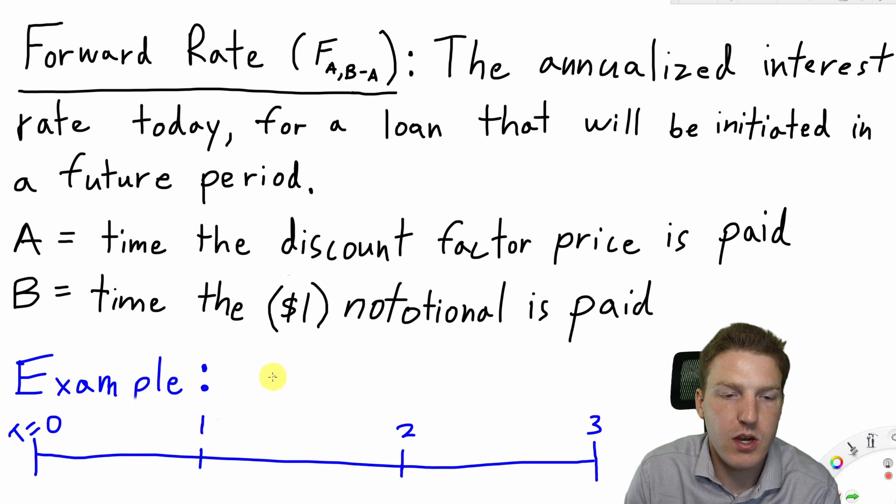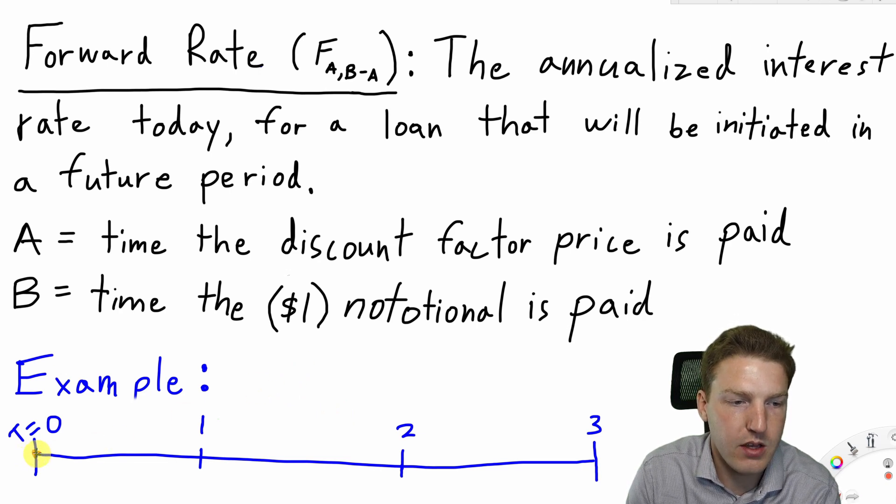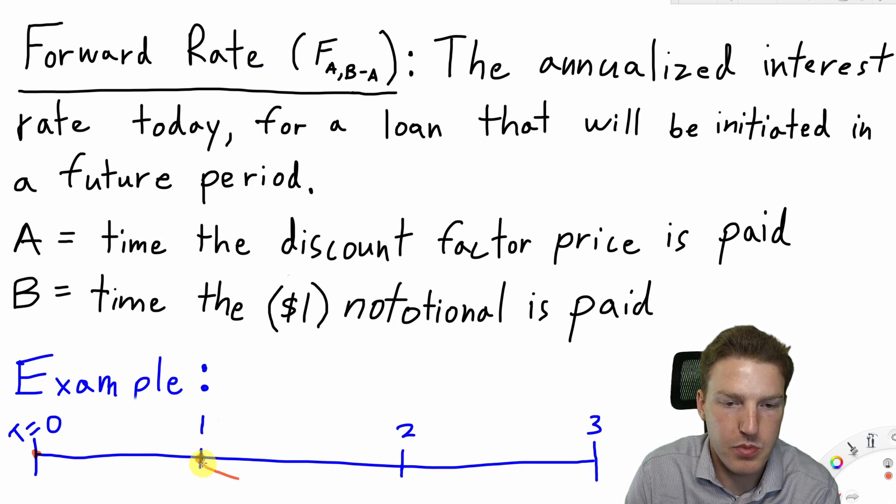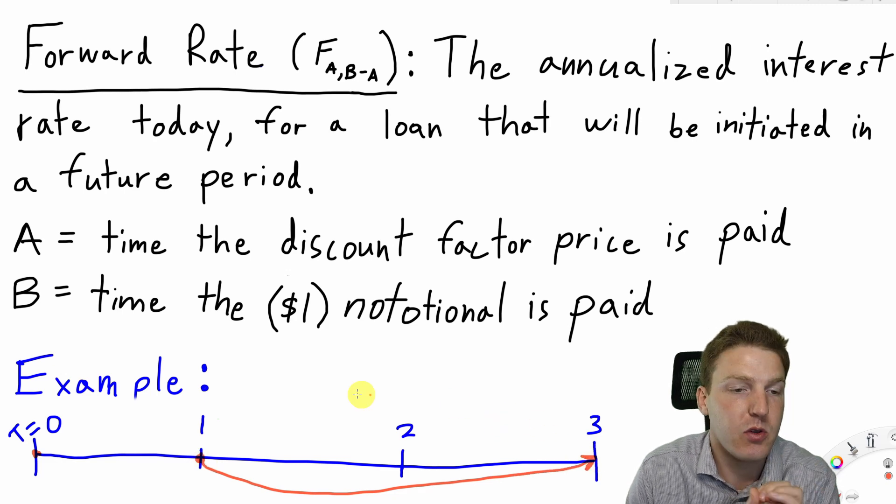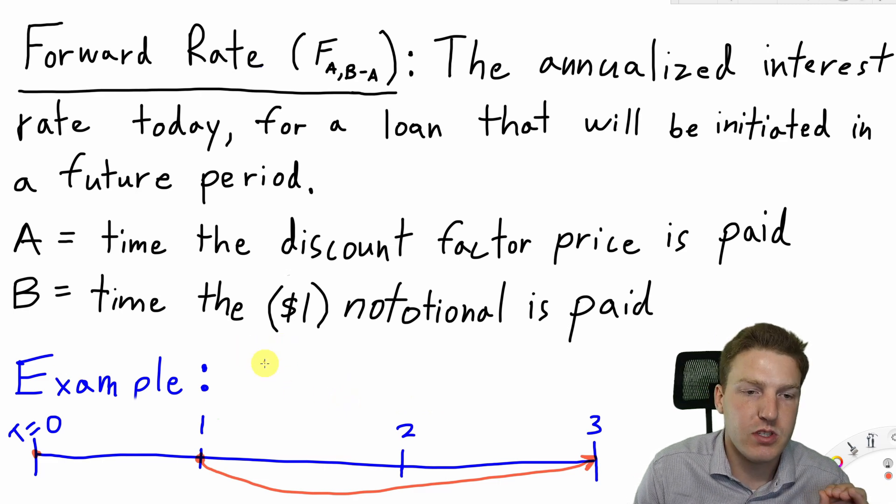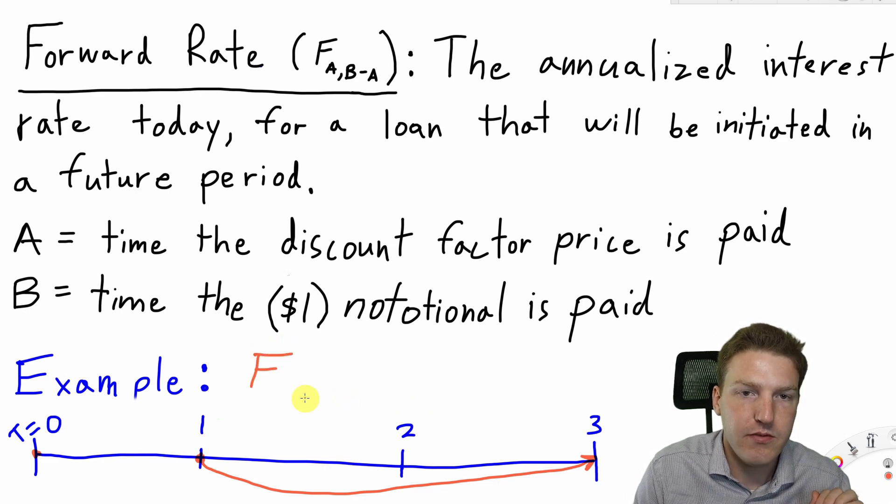So what if I wanted to enter into a contract today where I would pay a price 1 year from today to lock into a loan that would be paid back to me 2 years after that? So at time equals 3. How would we represent this? We could show this as F 1, 3 minus 1.